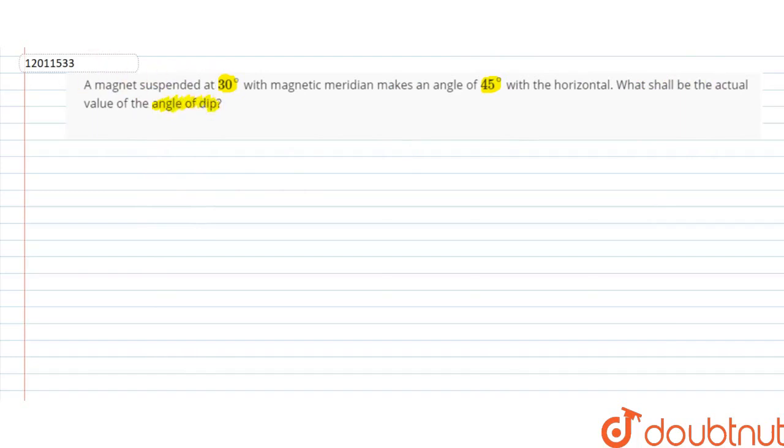So the question is very simple. The value of theta is 30 degrees, and the value of the apparent dip is 45 degrees. What is our apparent dip?